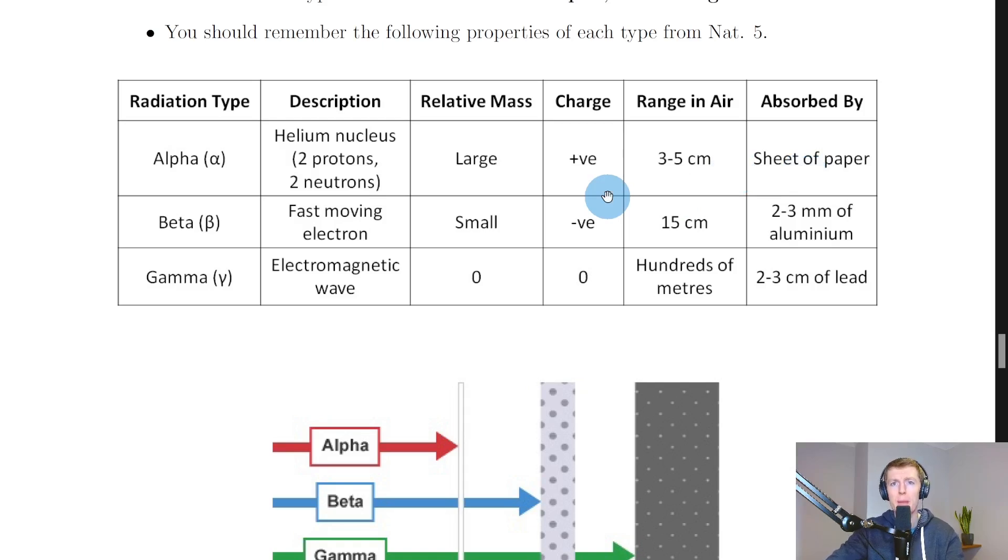Remember we have the symbols for alpha, beta, and gamma first of all and their descriptions. So for alpha, remember this is a helium nucleus, or we say it's made up of two protons and two neutrons. For beta radiation, remember that's a fast moving electron.